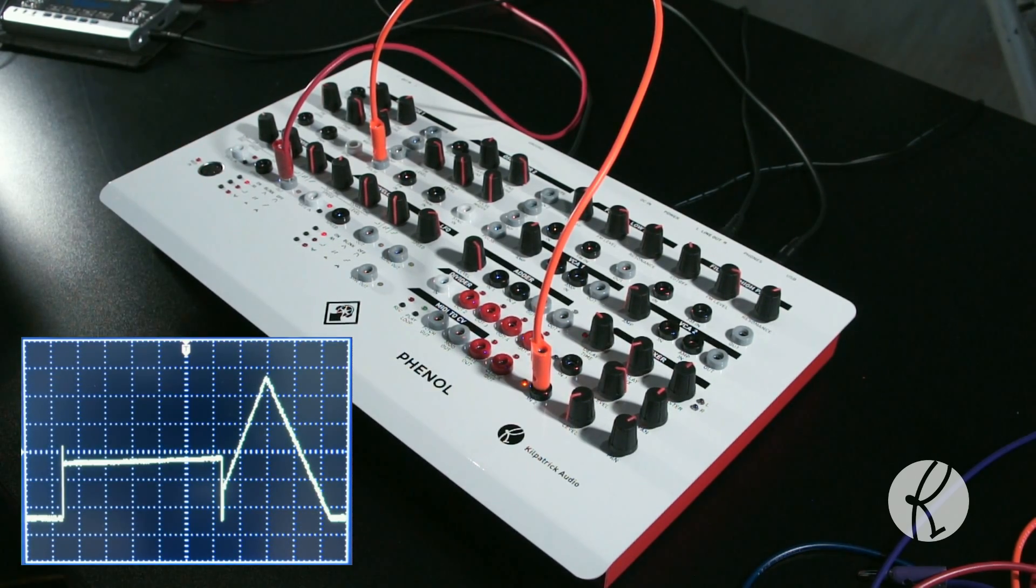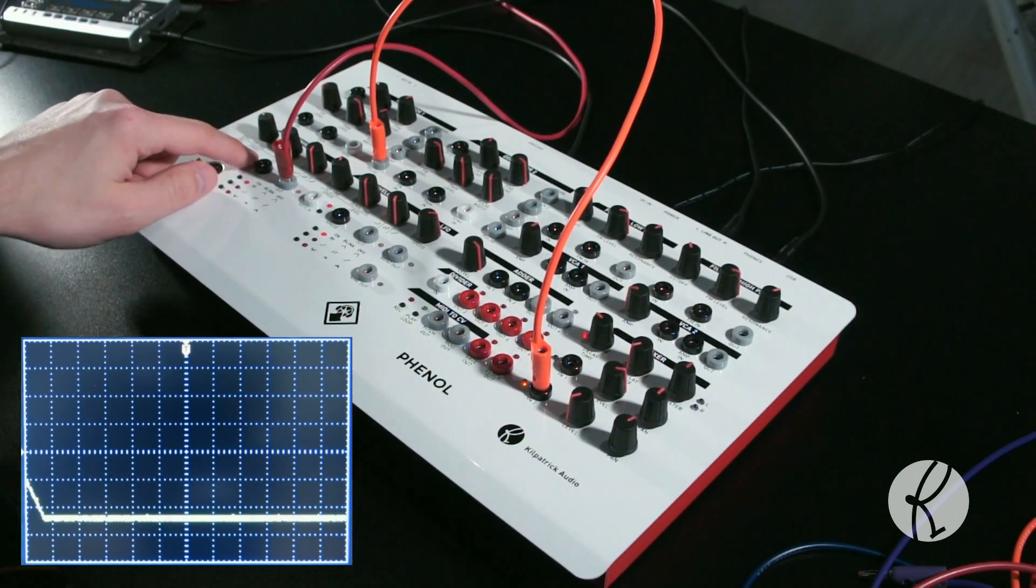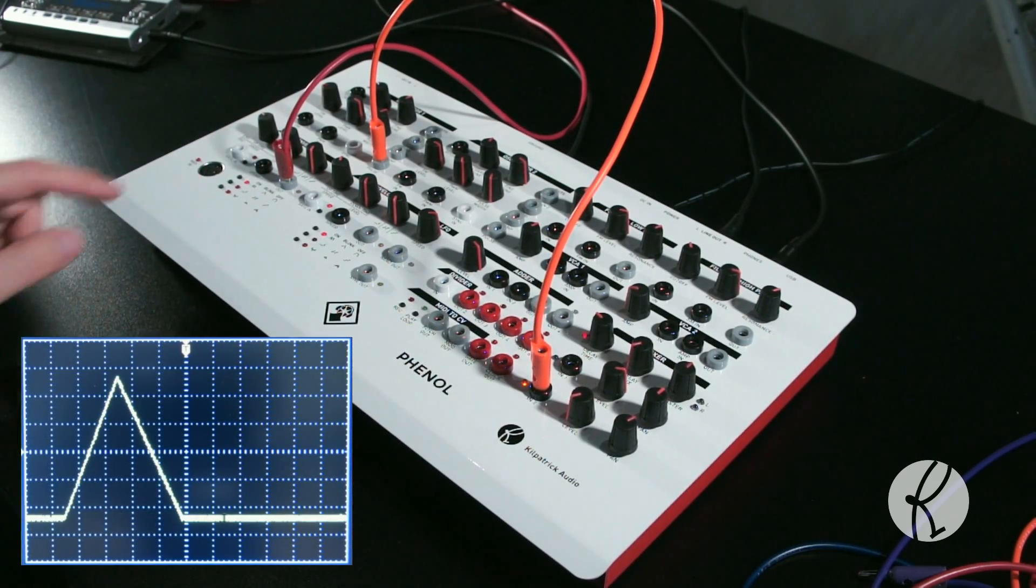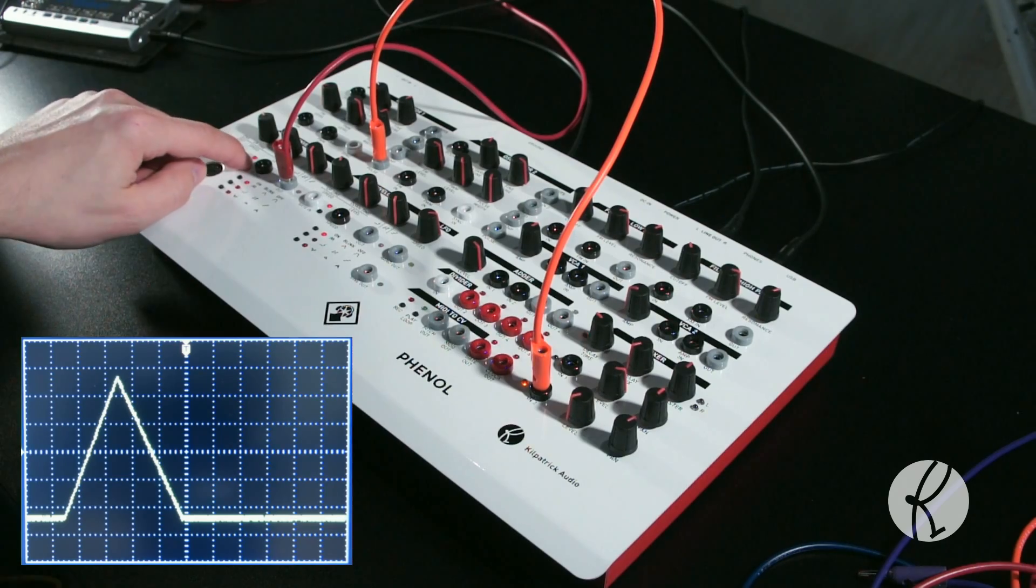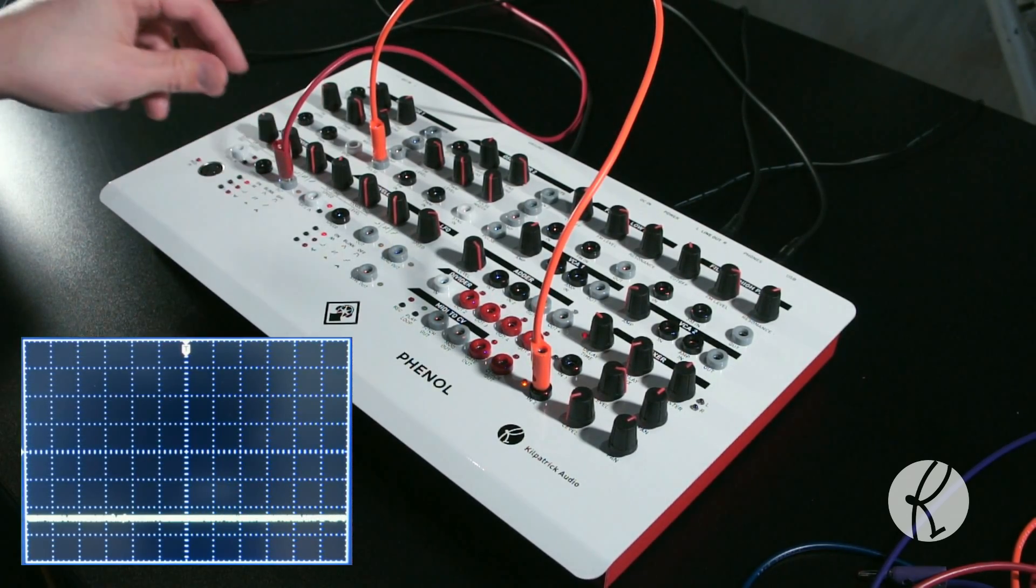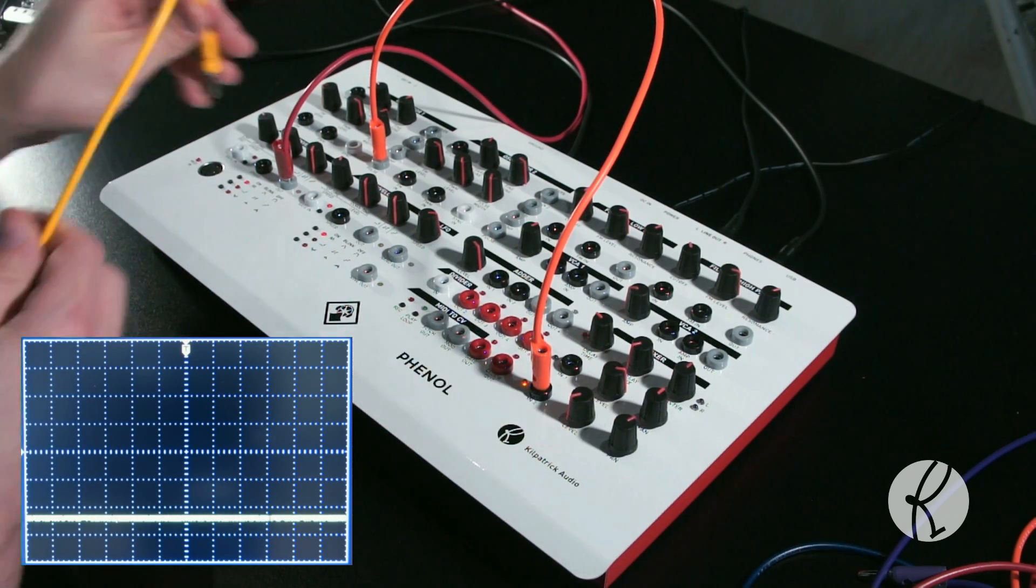The envelope generators on Phenol have three modes: attack hold release mode, attack release mode, and oscillator mode. These can make all different kinds of modulation shapes that are useful for starting and stopping notes, sweeping filters, making percussive sounds, and as a source of low frequency oscillations.